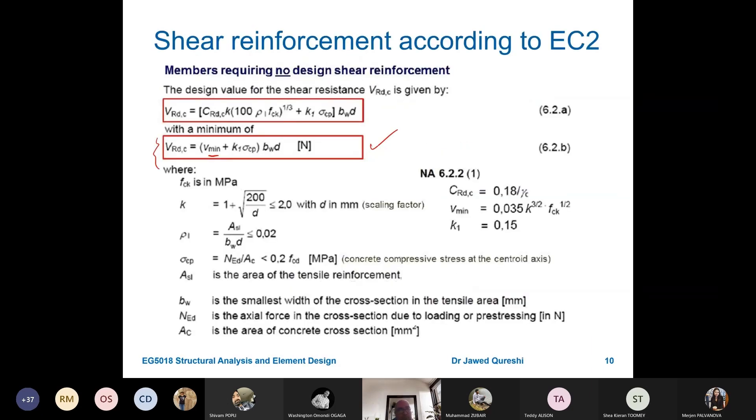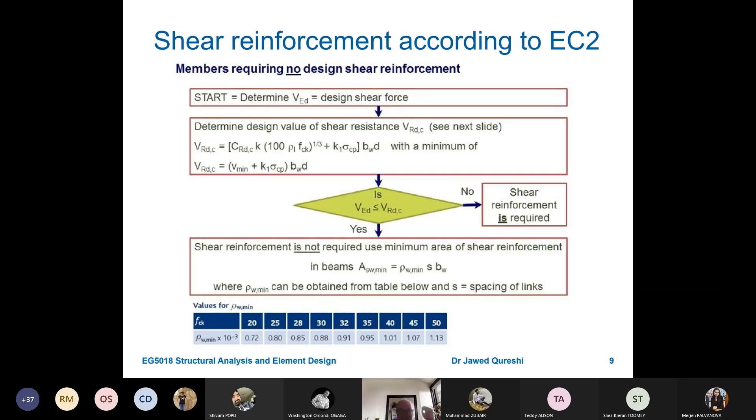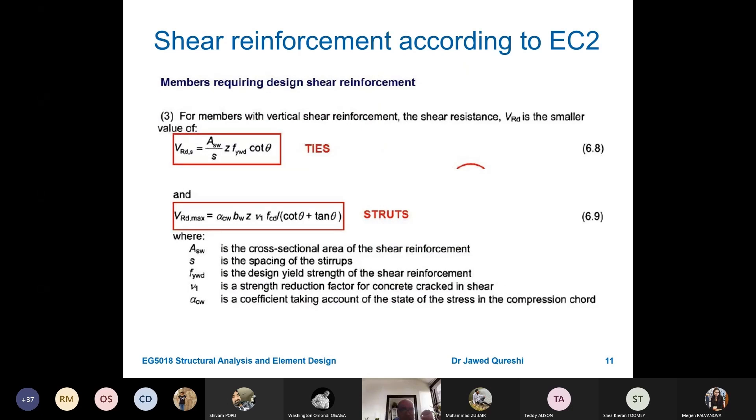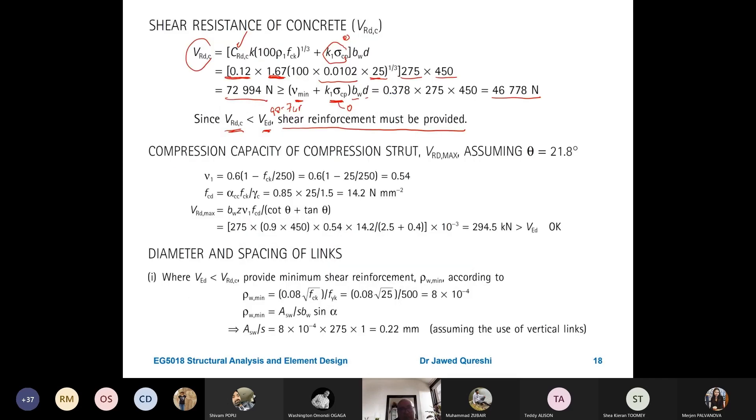So, when no shear is provided, then I just have to use the minimum values. Shear is not required to simply use minimum area. When it is required, then I have to use these two formula for ties and for struts. Now, we have to work out VRD max. That is the compression capacity of compression strut. Assuming angle to be 21.8. So, angle can be any angle between 45 and 21.8. Normally, we use this one for economy. Here again, I will use the formula. Formula is this one. In this one, I have to figure out V1 first of all.